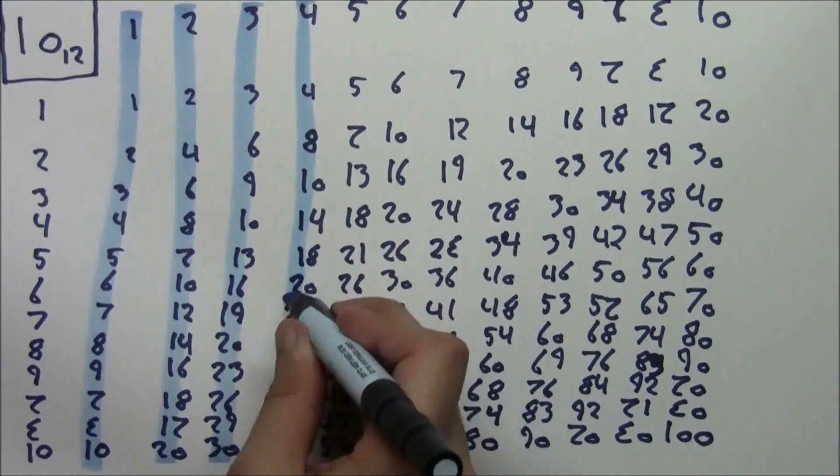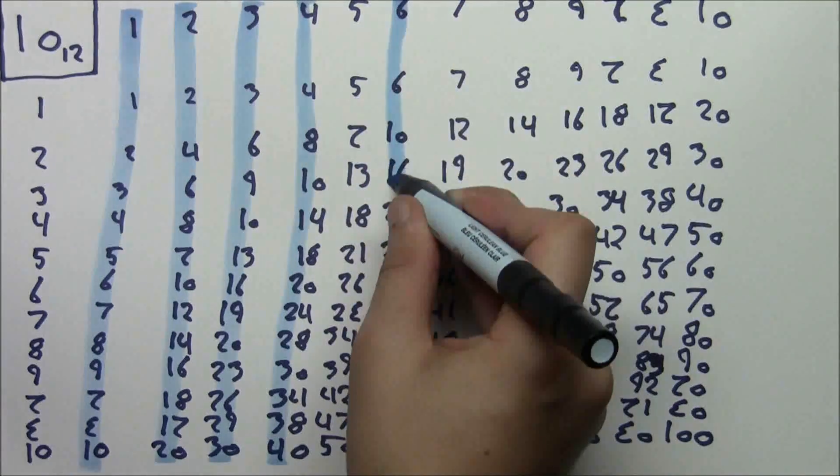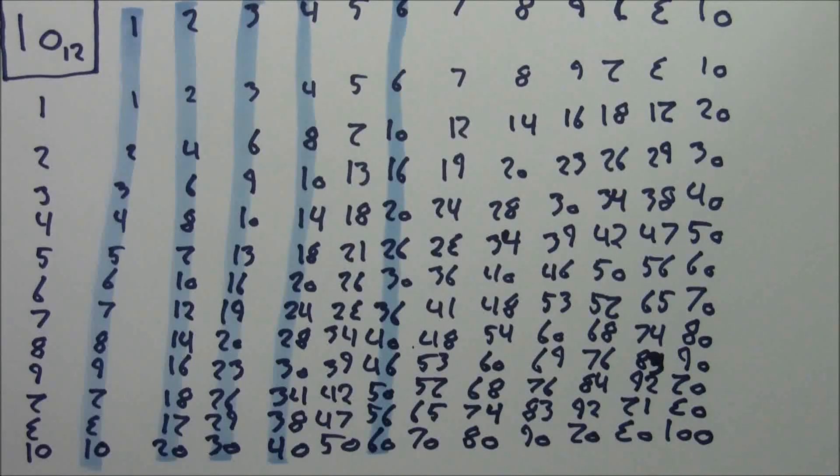With 4, we get a clean 4, 8, 0, 4, 8, 0. Then in 6, we get something similar to what 5 does in decimal, where we get 6, 0, 6, 0, 6, 0.